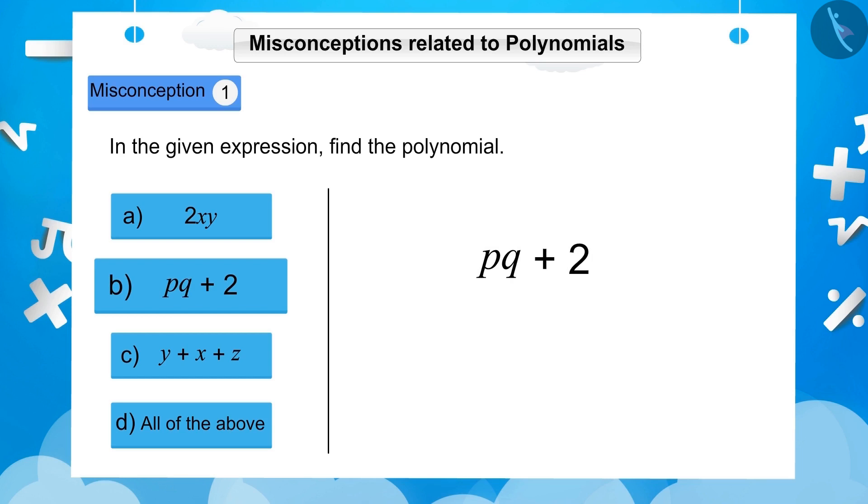b, pq plus 2. If you observe option b, then you will find that this expression pq plus 2 has two terms. So, this is a binomial. Hence, it will also be a polynomial as it has more than one term.